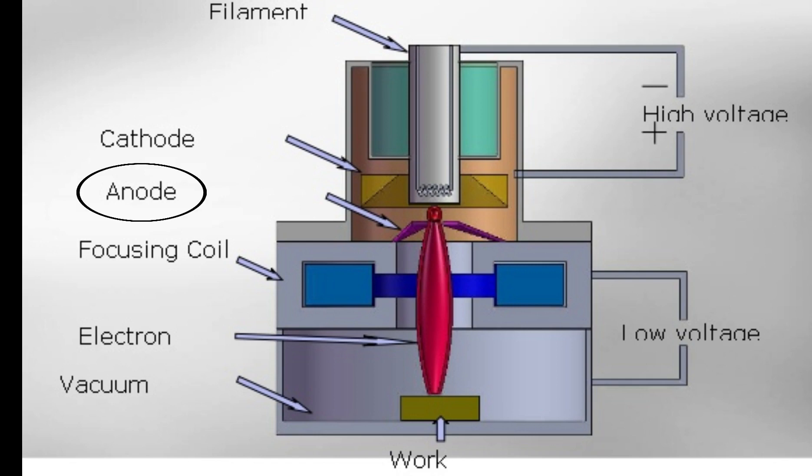The anode is a positive pole which is placed just after the electron gun. Its main function is to attract negative charge, in this case electrons, provide them a path, and not allow them to diverge from their path.